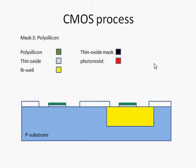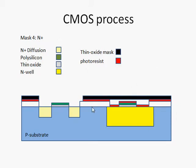Next we will look at how the active areas are formed. We will use an N-plus mask to define the areas in which the N-well active areas are to be formed. As you can see, the N-plus diffusion mask has an opening here, and after the photolithographic and etching process, the openings in the oxide along the surface of the P-substrate are patterned.